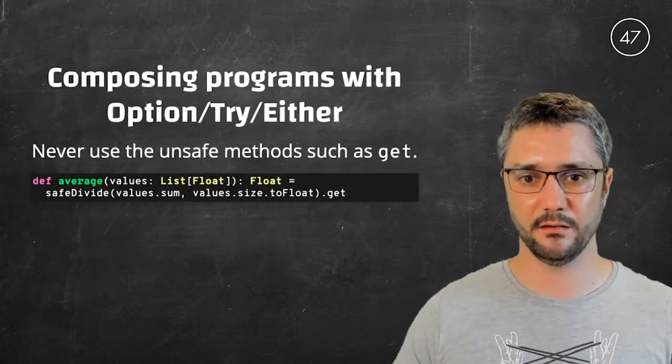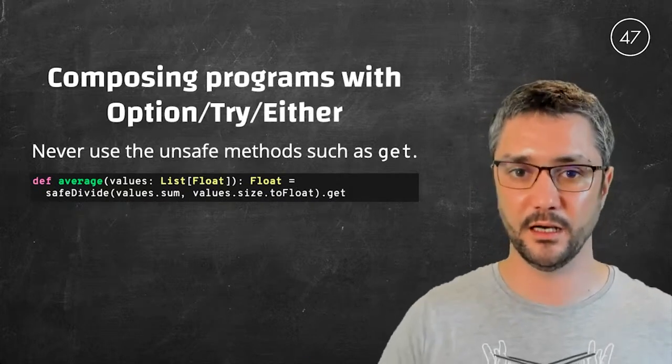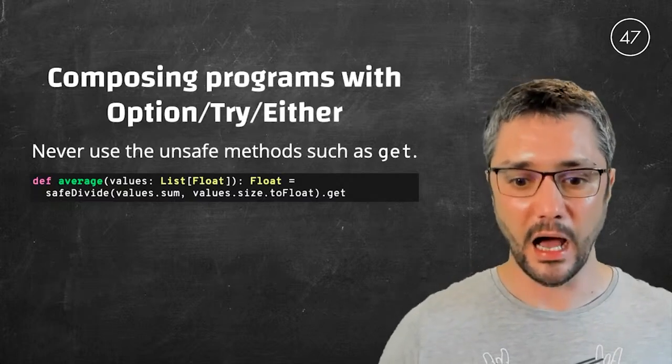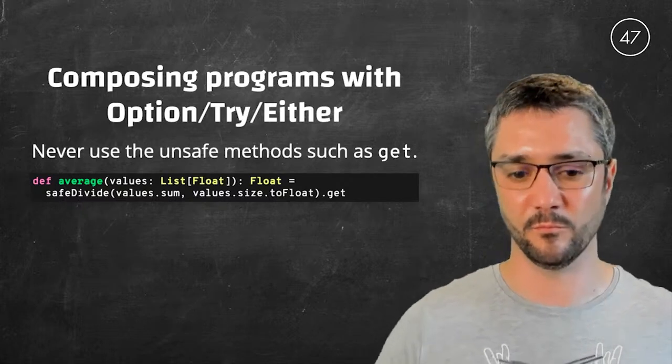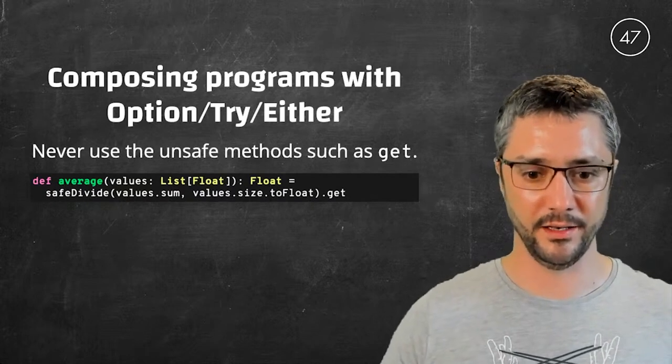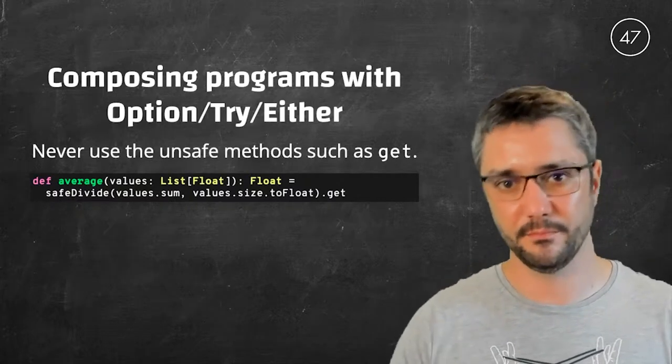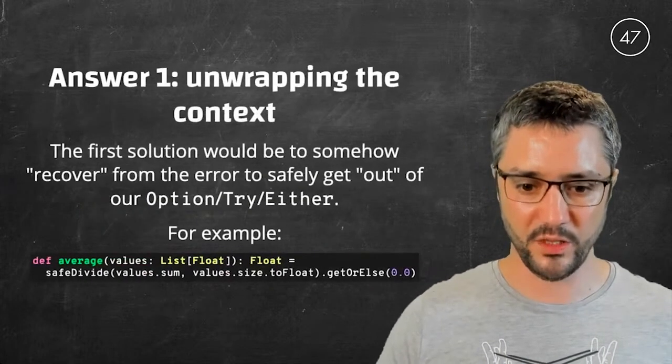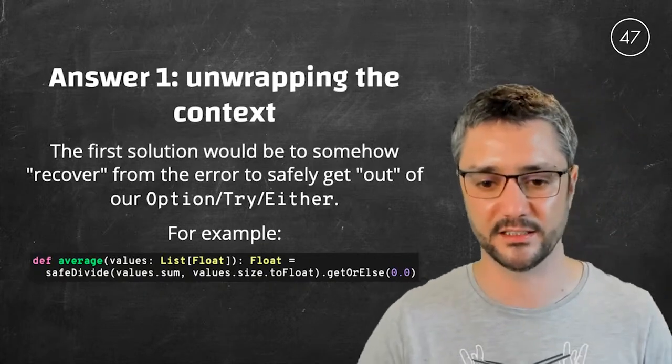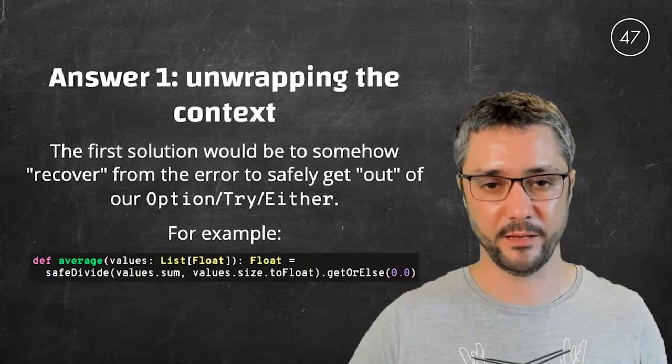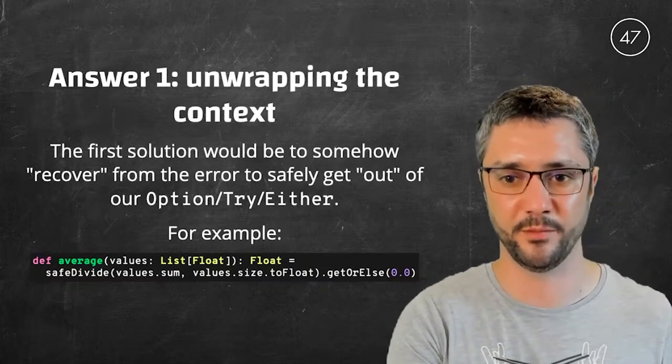But since now our functions that may fail return their results wrapped into an error context, be it option, try or either, and we are not allowed to use the unsafe methods like get, how can we use these functions? For example, I want to compute the average of a list of floats. So I want to use my safe division. And how do I obtain the result at the end if I cannot use get? Well, there are two answers to that question. First, we could try to unwrap this context. Option, try and either have various methods for that. For example, option has a getOrElse method. If I provide a default value to getOrElse, it will return what's inside the option or the default value I provided to getOrElse.